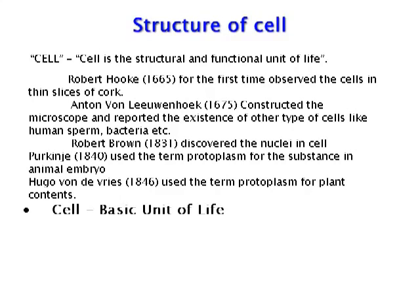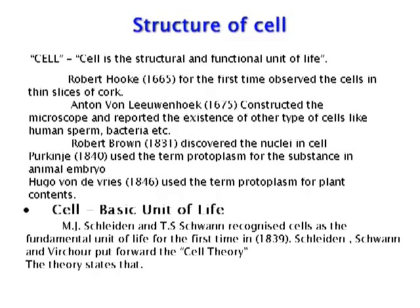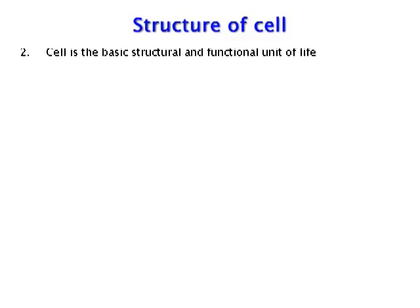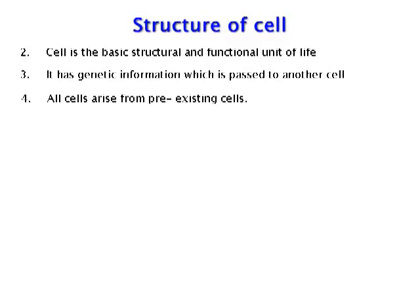Cell as the basic unit of life: M.J. Schleiden and T.S. Schwann recognized the cell as the fundamental unit of life for the first time in 1839. Schleiden, Schwann and Virchow put forward the cell theory. The theory states that living organisms are made up of cells; cell is the basic structural and functional unit of life; it has genetic information which is passed on to another cell; and all cells arise from pre-existing cells.